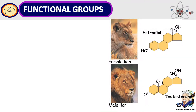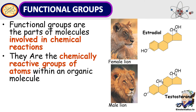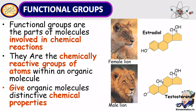The next reason why carbon is abundant in nature is because of carbon's ability to form functional groups. Functional groups are parts of molecules involved in chemical reactions — the chemically reactive groups of atoms within an organic molecule — and they give organic molecules distinctive chemical properties. One example of functional groups can be seen in estrogen in female lions and testosterone, the male hormone.